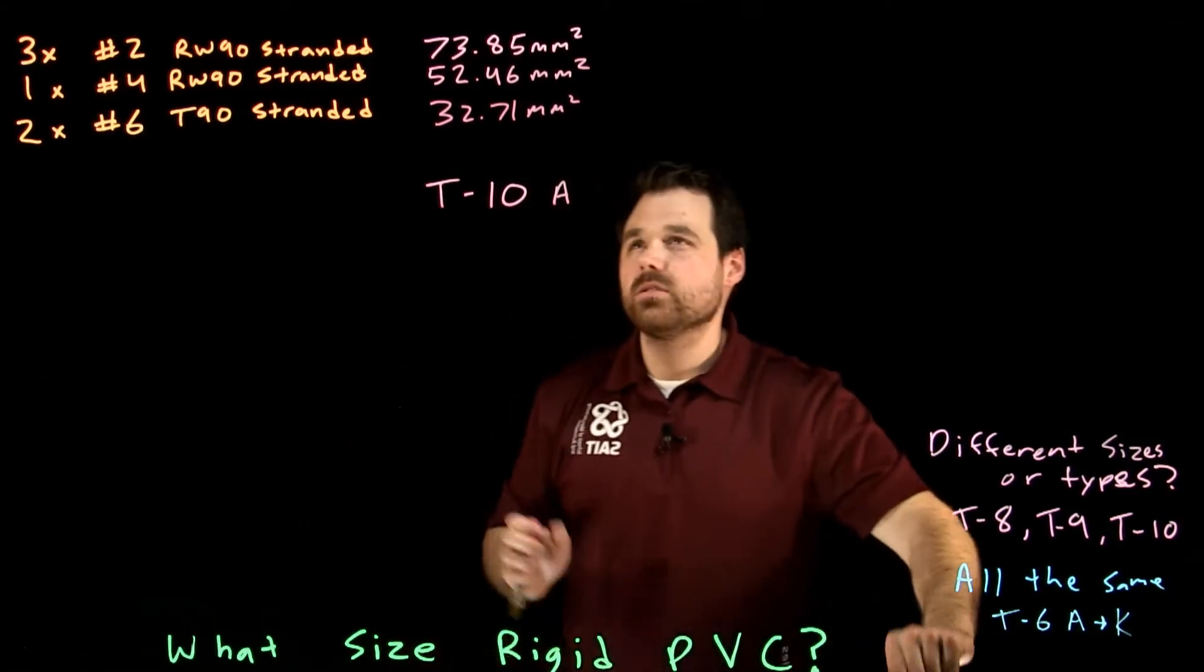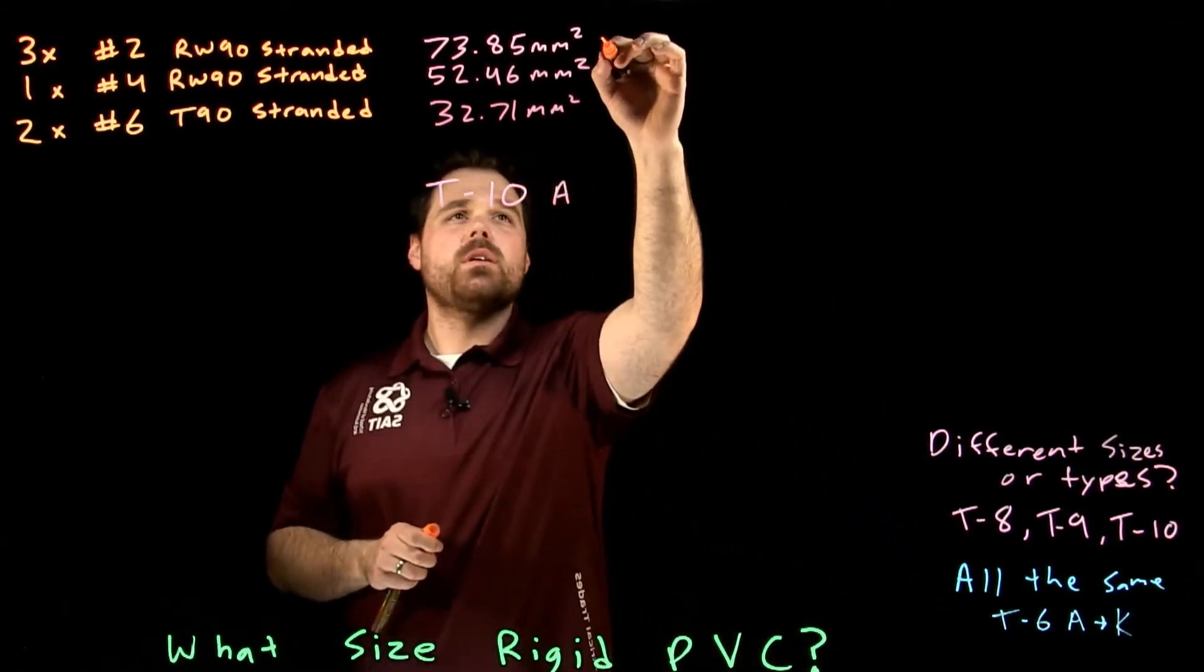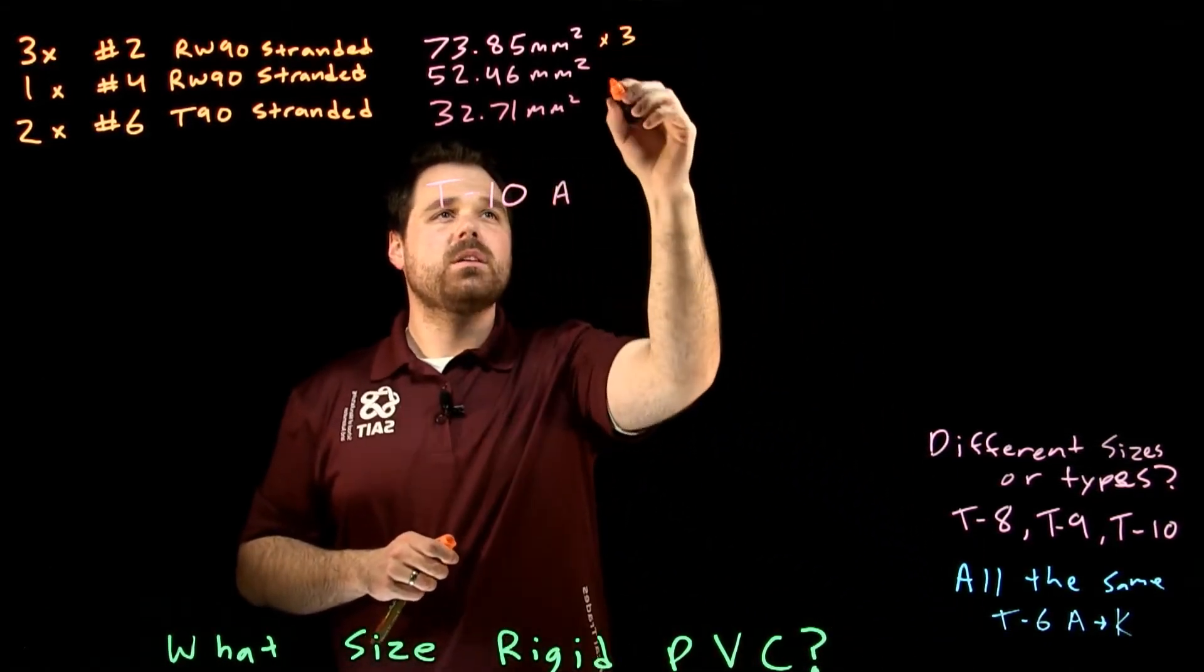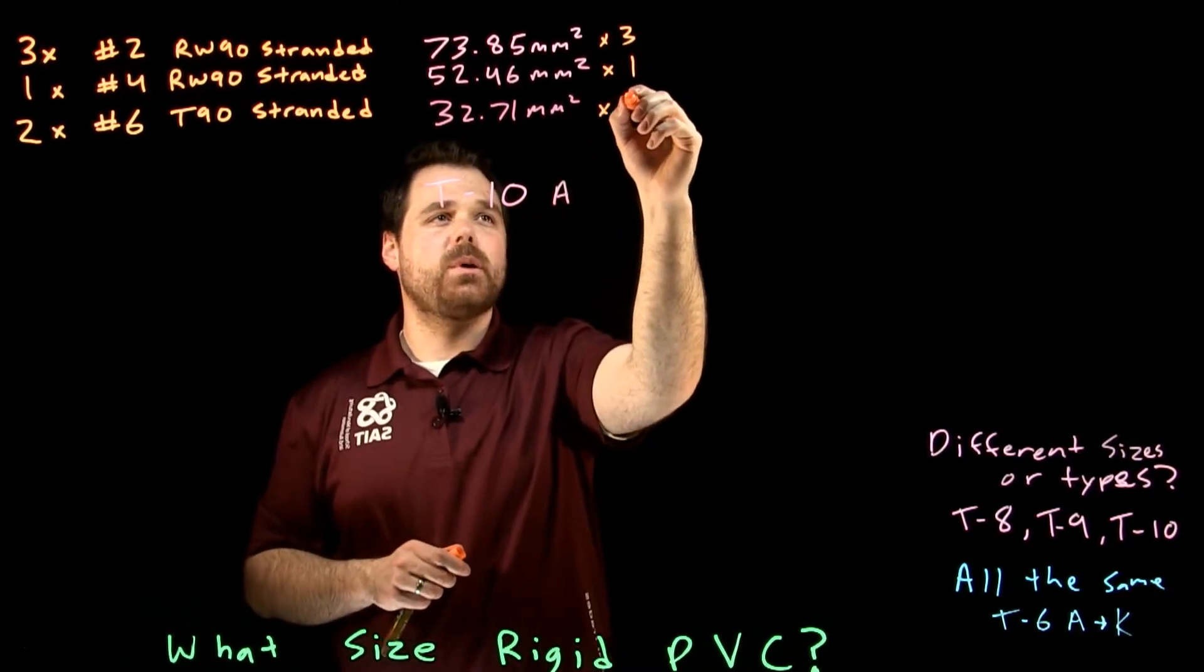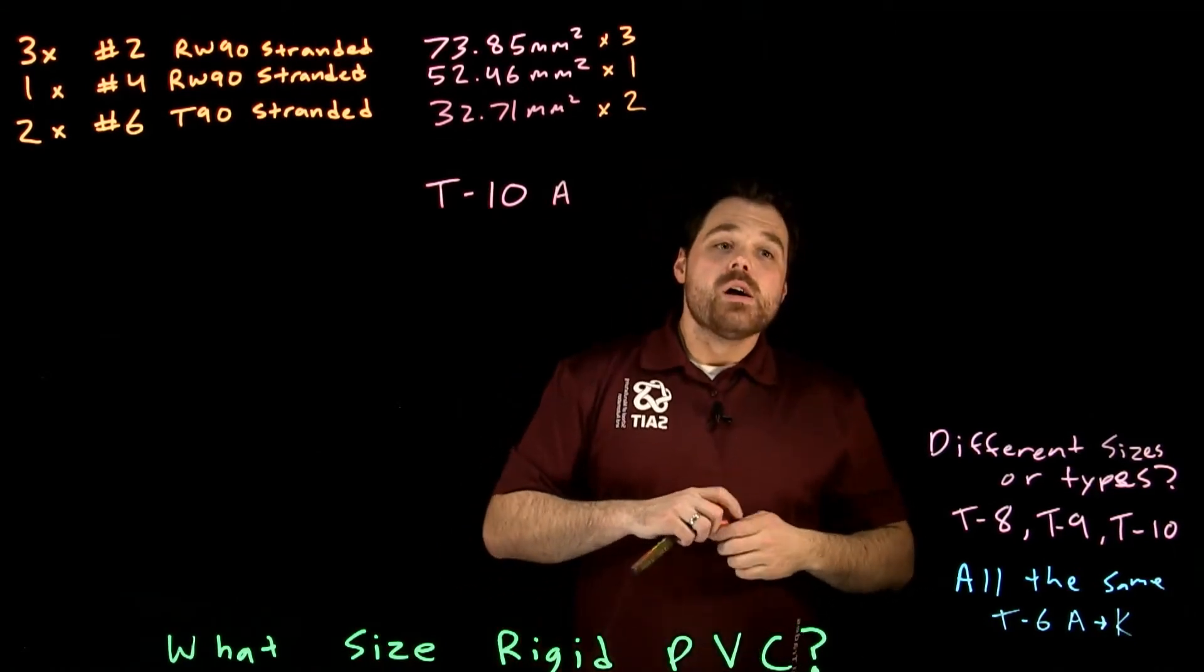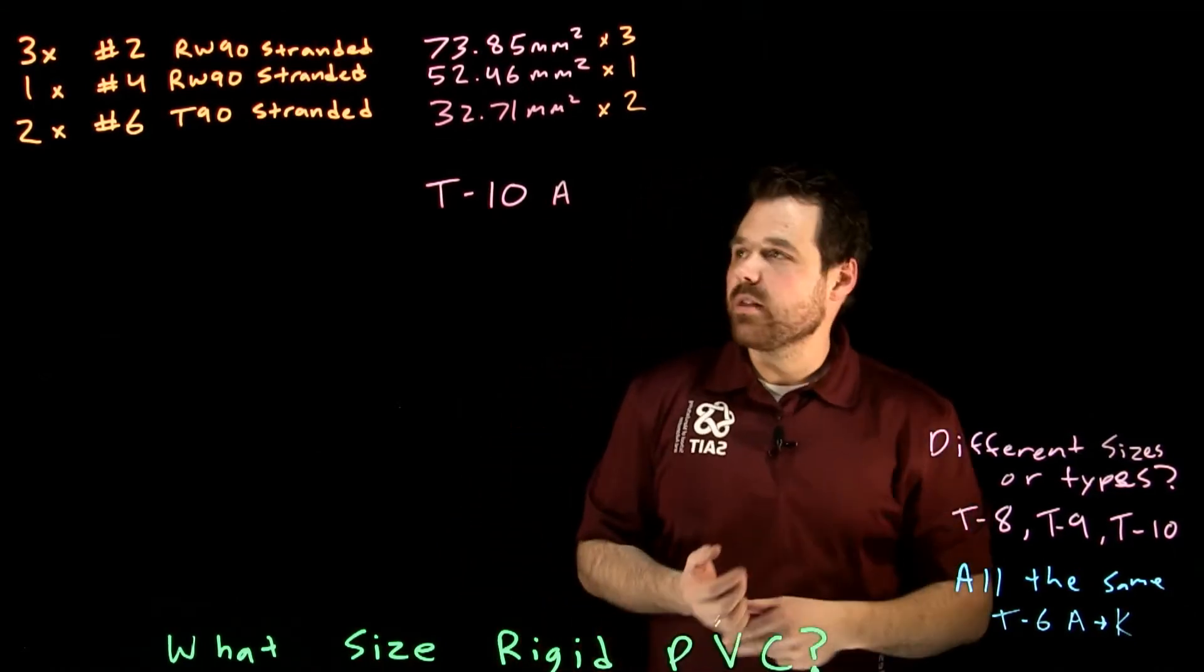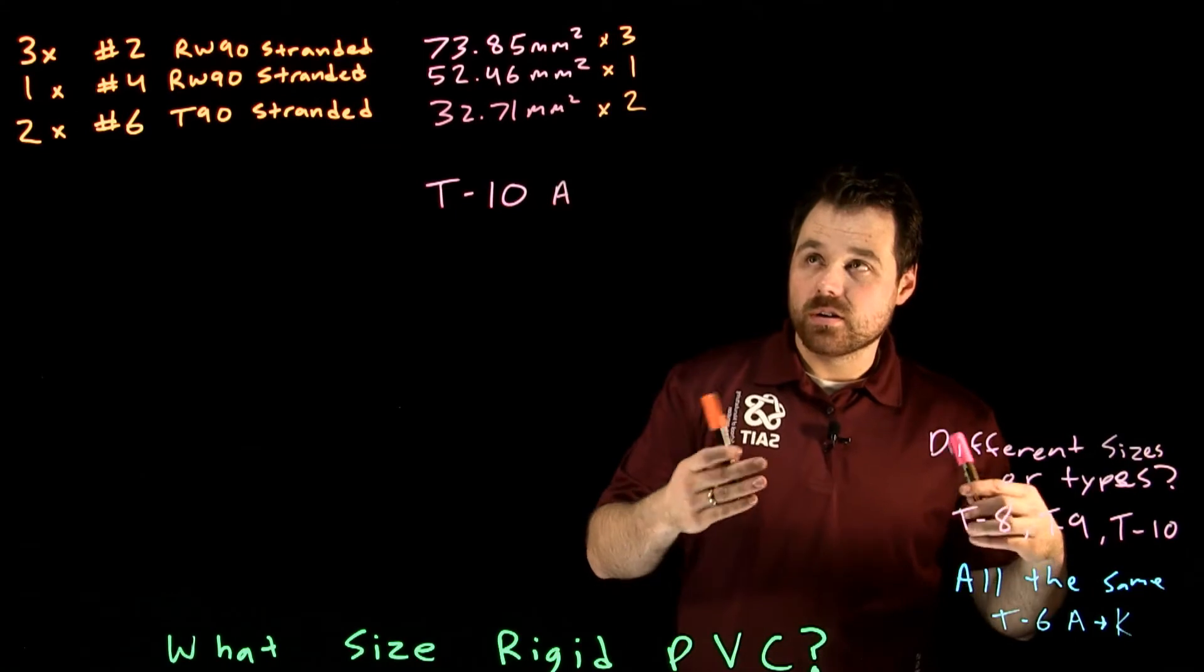Perfect. Then I take that and I go, okay, I know I have, multiply that by three, multiply that by one, because that's how many I have. Multiply this guy by two, because that's how many I have. That's going to give me the total area that all of those conductors are taking up.